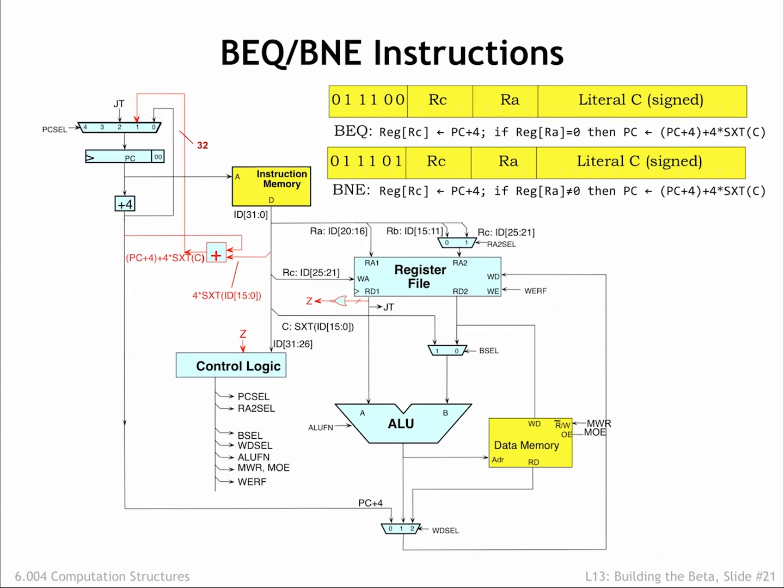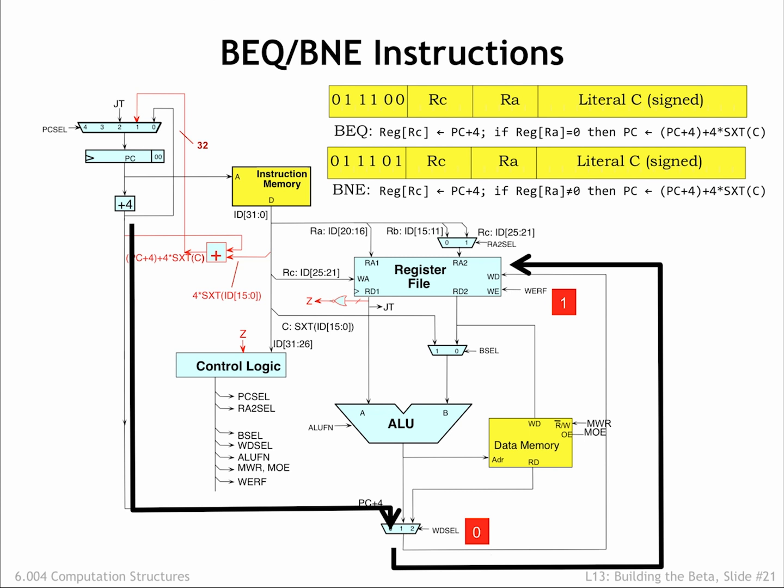As in the jump instruction, the PC plus 4 value is routed to the register file to be written into the RC register at the end of the cycle.